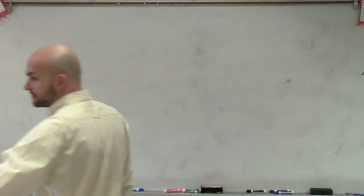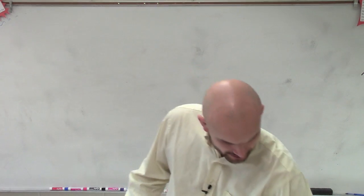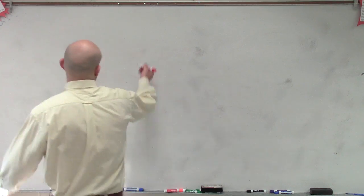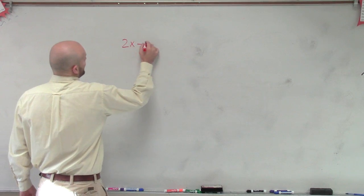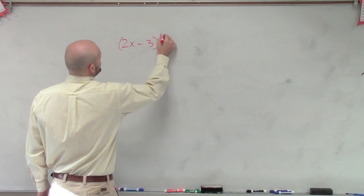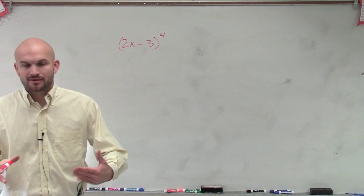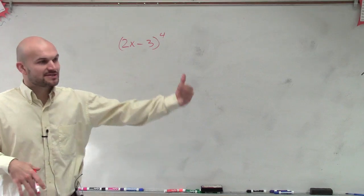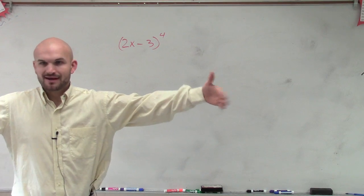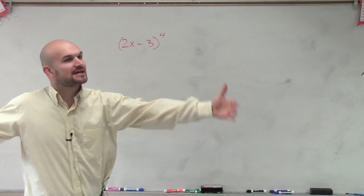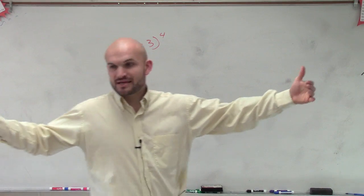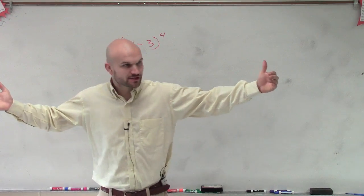Now that we've talked about how to find our coefficients, let's say I ask you to expand (2x - 3) to the fourth. You know that you could simply multiply (2x - 3) times (2x - 3), that's going to give you a trinomial, and then you do a nice big trinomial times a nice big trinomial. That's just going to be a lot of multiplying and a lot of combining like terms, right?